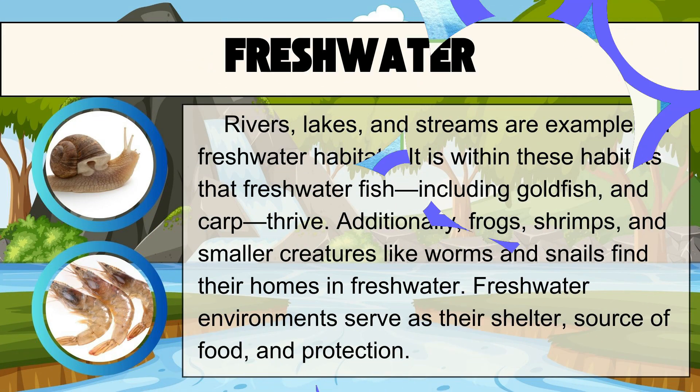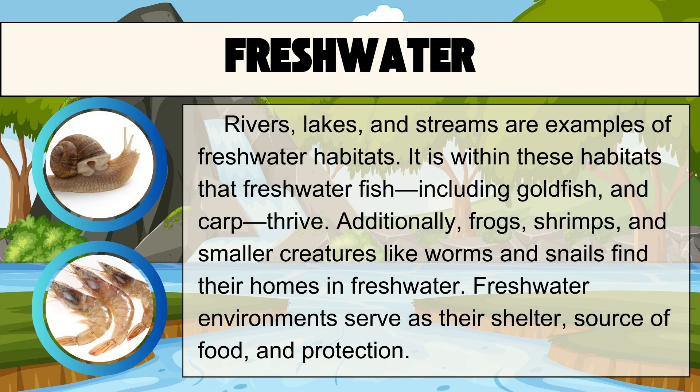Rivers, lakes, and streams are examples of freshwater habitats. It is within these habitats that freshwater fish, including goldfish and carp, thrive. Additionally, frogs, shrimps, and smaller creatures like worms and snails find their homes in freshwater. Freshwater environments serve as their shelter, source of food, and protection.